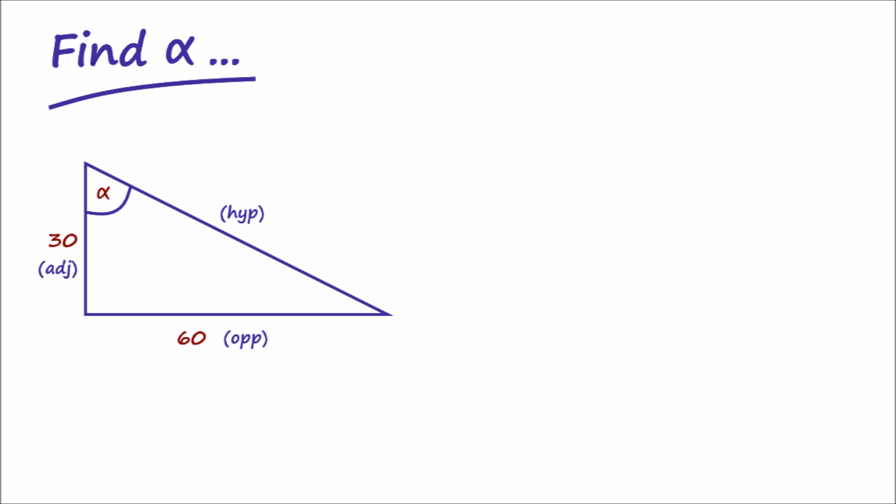Here, we have a different triangle. In the previous example, we found the length of a side, given that we already knew an angle and one of the other sides. Here, we are instead going to find the angle, given that we know two of the sides to begin with.